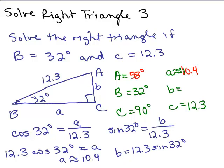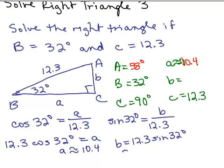We're going to put that in our calculator and get our approximate answer. Put in your calculator 12.3 and then the sine of 32 degrees. I've got that to the nearest tenth, 6.5. So I'm going to say b is approximately 6.5.